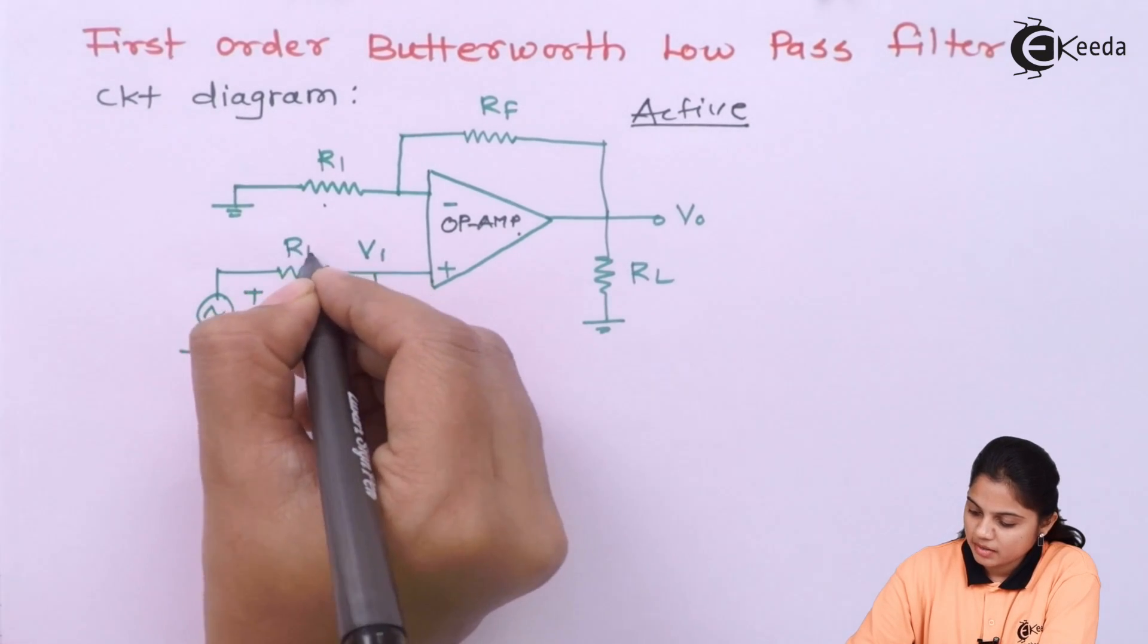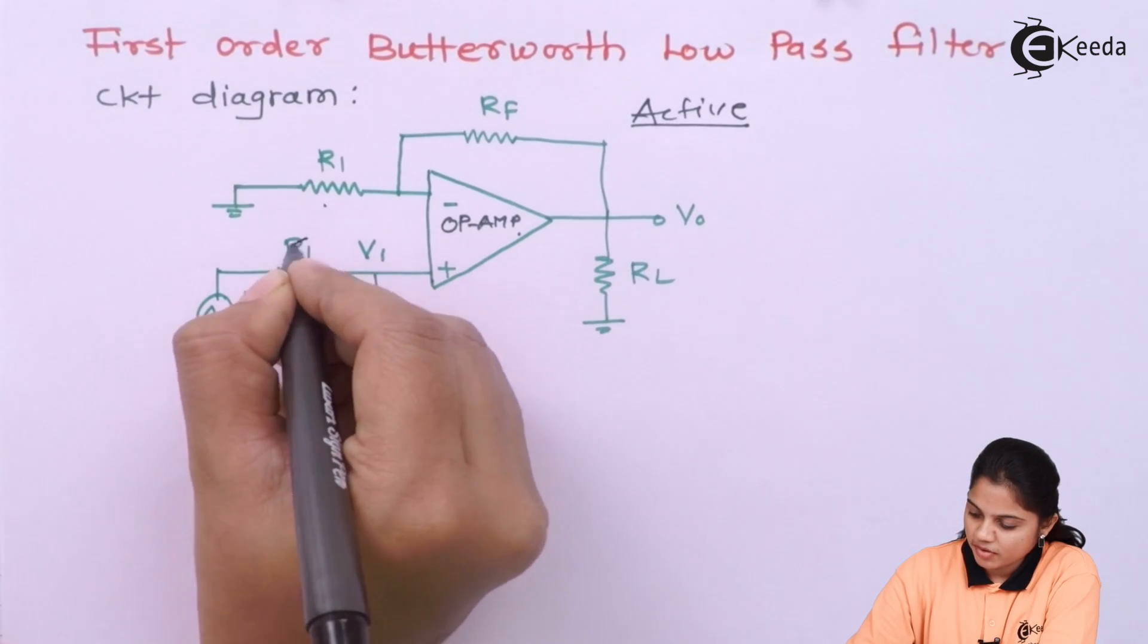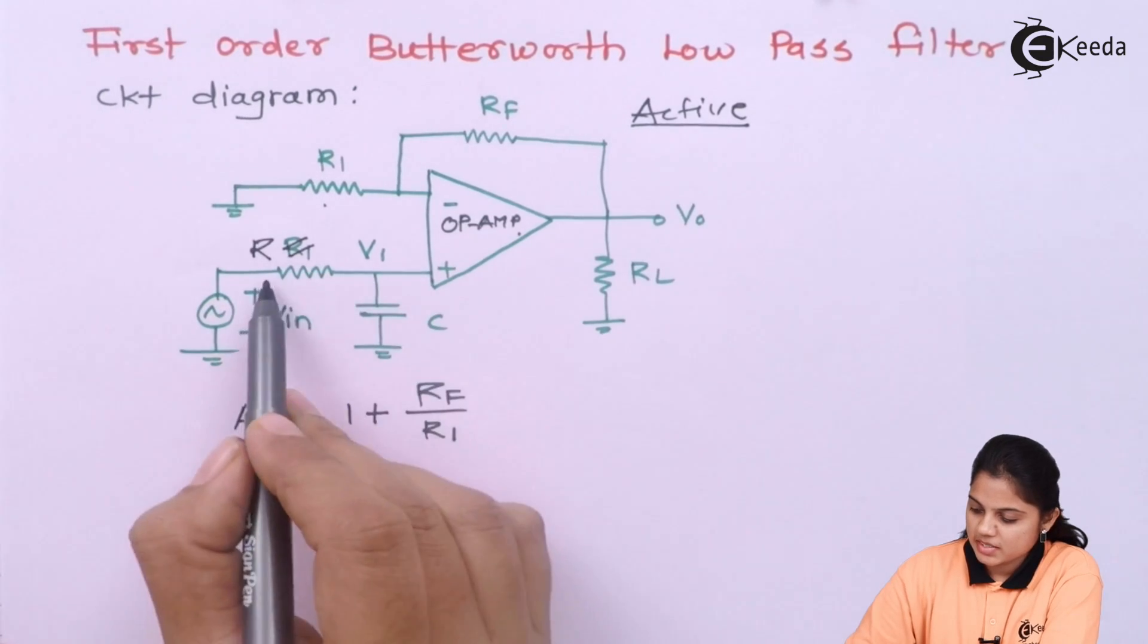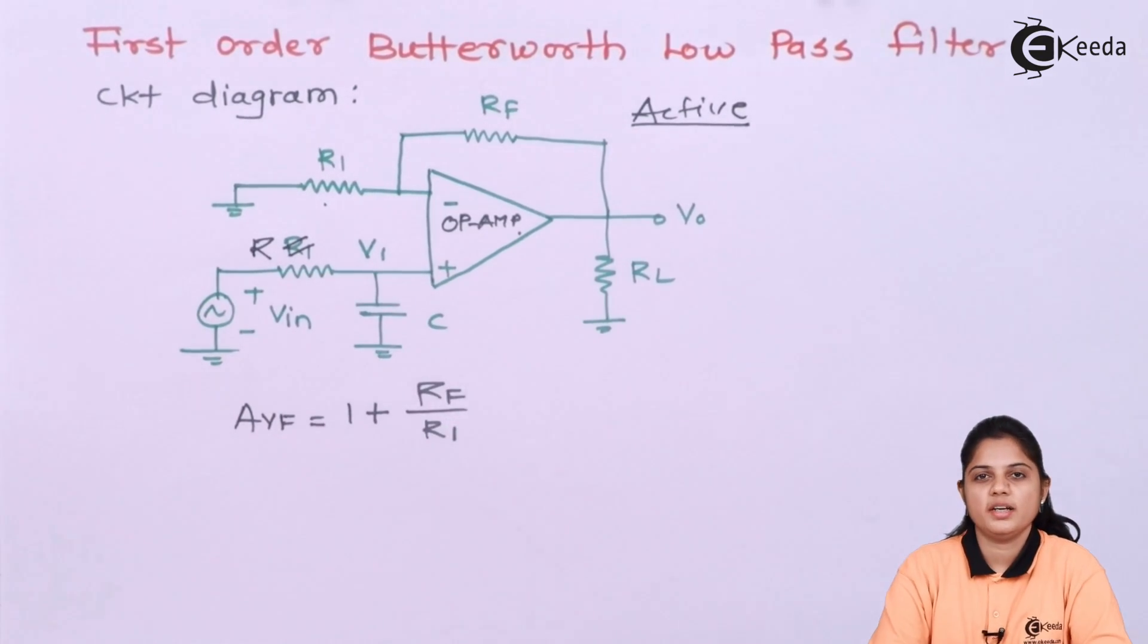Then you have a parameter R. I will write, instead of R1, I will write R over here. This resistance and capacitor are connected over here.